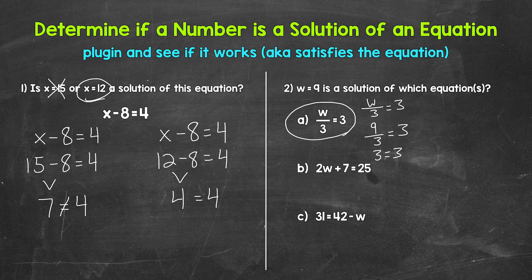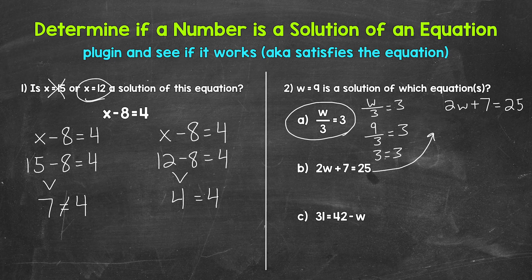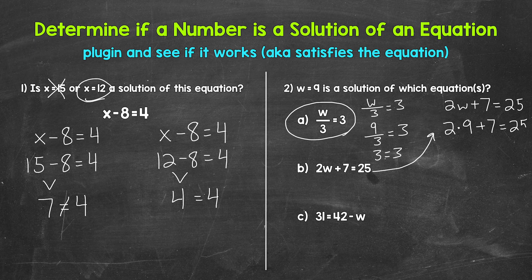So let's come to the side here. We have two w plus seven equals 25. Plug in nine for w. So two times nine plus seven equals 25.